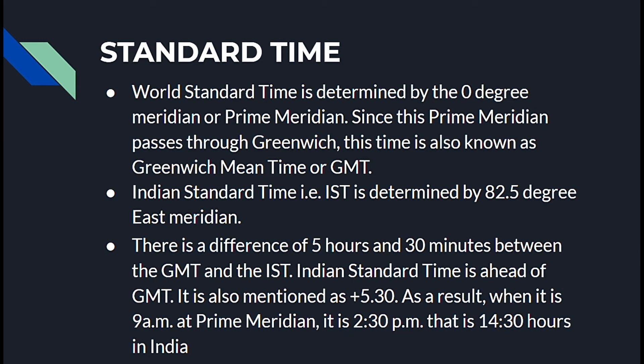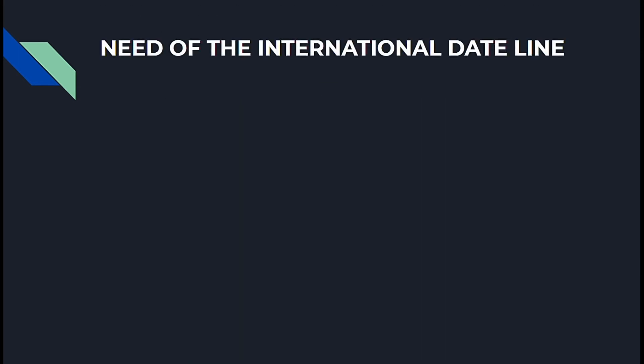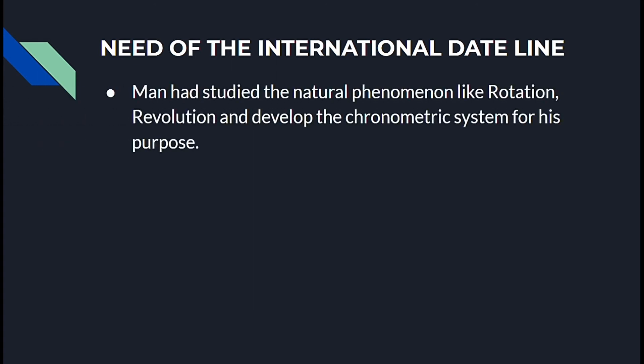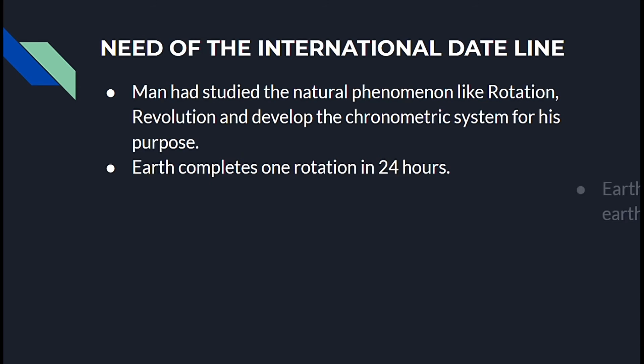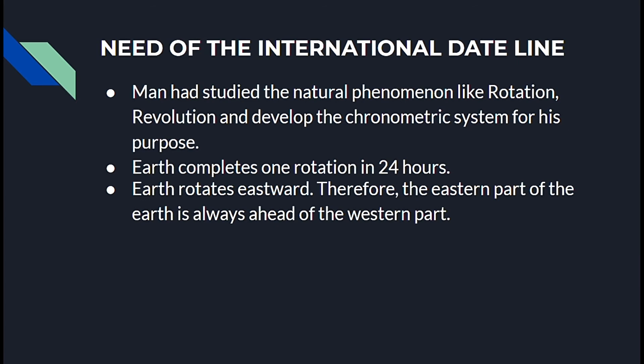Ahead of the international date line, man studied natural phenomena like rotation and revolution, and developed the chronometric system for his purpose. Earth completes one rotation in 24 hours. Earth rotates eastward, therefore the eastern part of the Earth is always ahead of the western part.